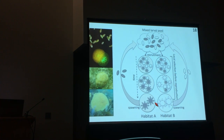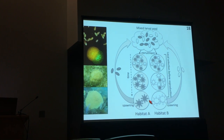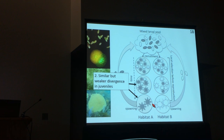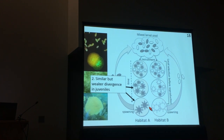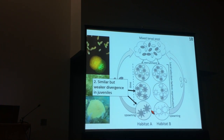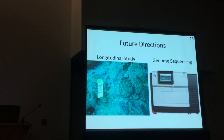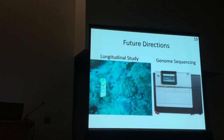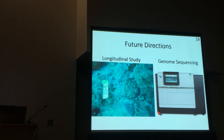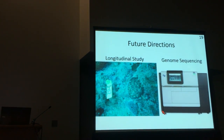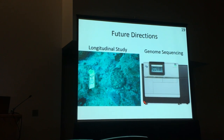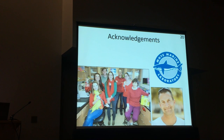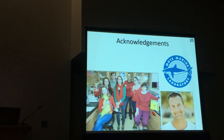In summary, we're investigating local adaptation in broadcast-spawning corals, which might seem unlikely given massive dispersal capacity and the close proximity of environmentally distinct reefs. We do find genetic divergence between adults and similar but less pronounced divergence among juveniles, suggesting ongoing selection will increase divergence over time. Future plans include a longitudinal study where we mark juveniles, track which genotypes survive, and test whether we can predict survival. We also plan whole-genome sequencing to move beyond de novo RAD analysis and identify which specific genes are under selection.